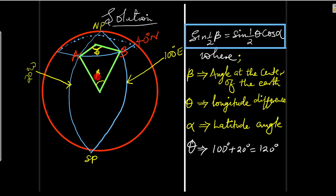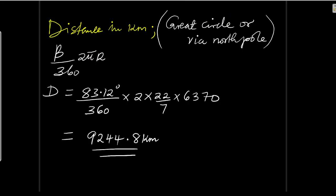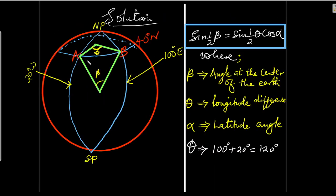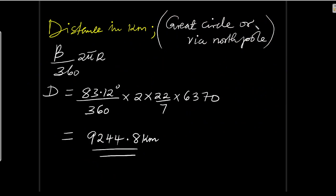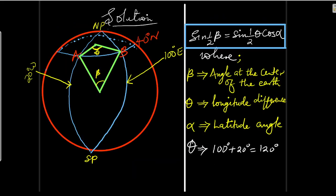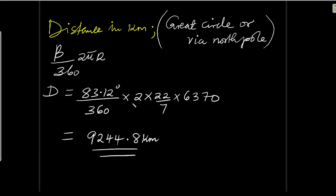Now we can use this angle to get the arc length. The distance in kilometers along the great circle via the north pole is given by β/360 × 2πr. Substituting beta = 83.12, divided by 360, multiplied by 2 × (22/7) × 6,370, that gives 9,244.8 kilometers. That is simply how you get the shortest distance along the parallel of latitude and along the great circle.